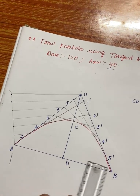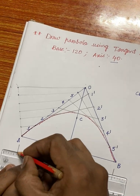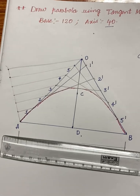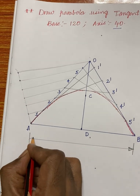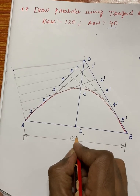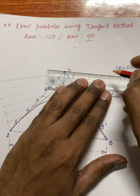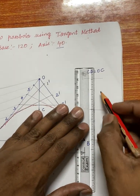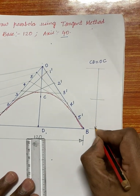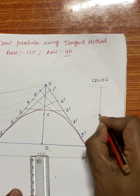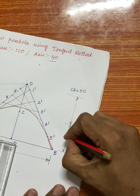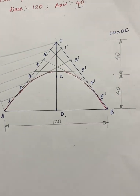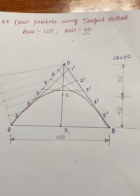Do not forget to write the dimensions after finishing your diagram and label it as 'tangent method.' The base is 120mm, split into two halves of 60mm each, and the axis is 40mm. Please like my videos and share with your friends so it may help them in engineering graphics. Thank you.